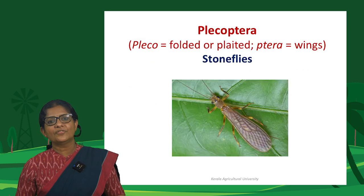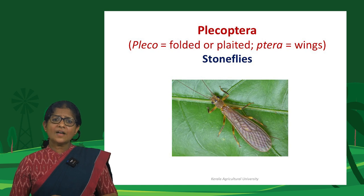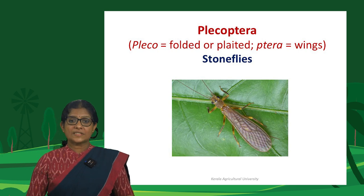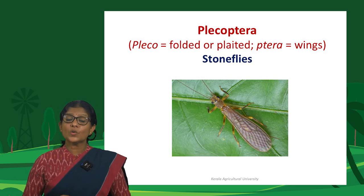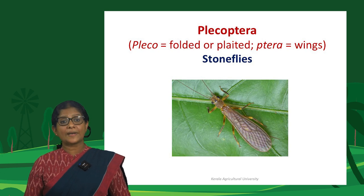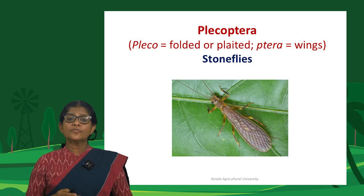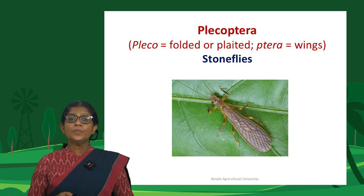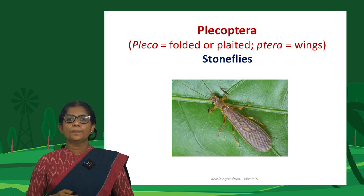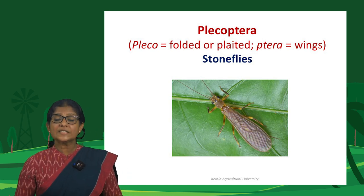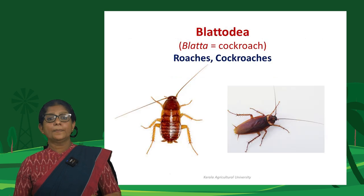Plecoptera are stoneflies, whose larvae are aquatic and also called naiads. The name Plecoptera refers to their peculiar wing venation where the venation on the forewing appears plated or folded — 'pleco' means plated or folded and 'ptera' means wings. Blattodea, from the word 'blatta' meaning cockroach, includes roaches or cockroaches.